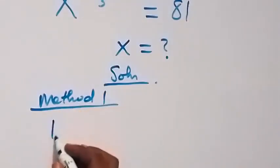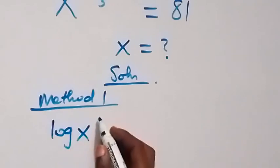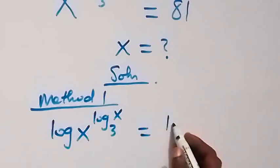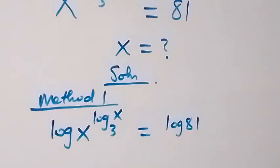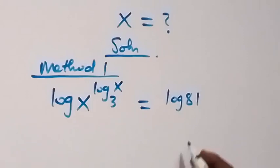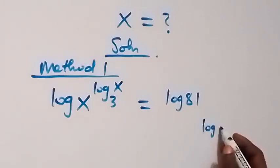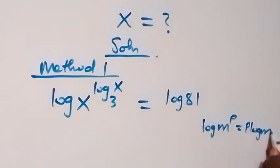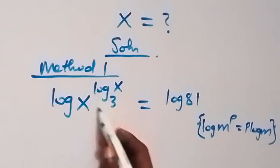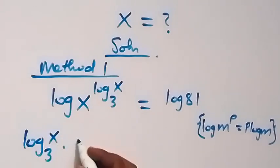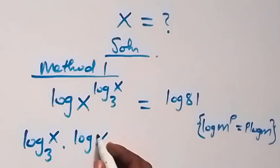What is given here: this side will now become log of x raised to the power log x base 3, and this side will become log 81. We are taking the log on both sides. When we apply the power rule of logarithms — log n raised to power p is the same as p log n — we can take the power log x base 3 to the front.